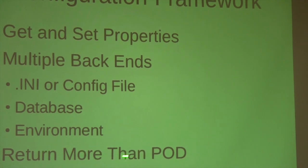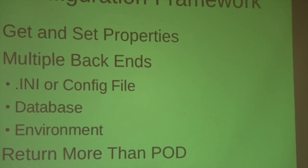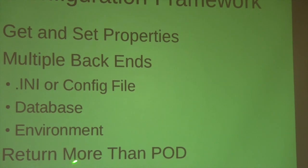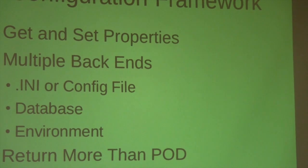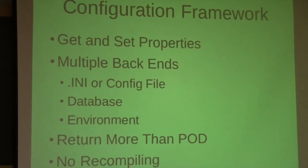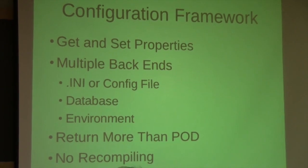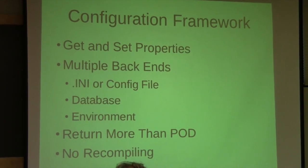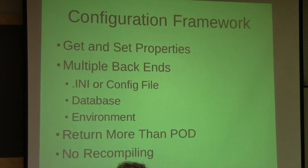I also wanted to return more than just plain old data. If I was going to templatize my get and make it generic, I didn't want get_string and get_int - I want to get anything. And finally, I didn't want to force clients to recompile every time I added a new type or a new backend. Clients should only have to recompile if they use something new. An existing client would not have to recompile if I added a new database backend they weren't using.